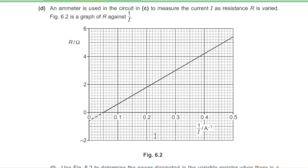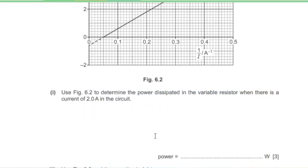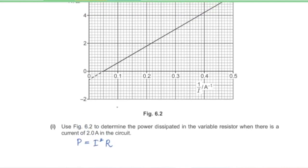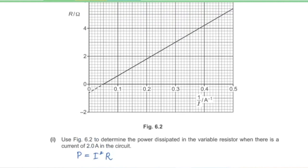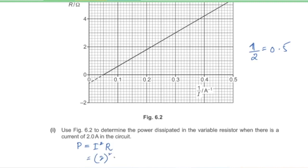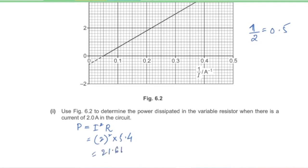Part C. A battery of EMF e and internal resistance r is connected to a variable resistor R. Using Kirchhoff's second law, the total EMF equals total PD around the loop: e = ir + iR. Rearranging gives R = e/i − r. Part D: Power dissipated in the variable resistor when current is 2 amperes. From the graph, when 1/i = 0.5, R = 5.4 ohms. Power = I²R = 4 × 5.4 = 21.6 watts.